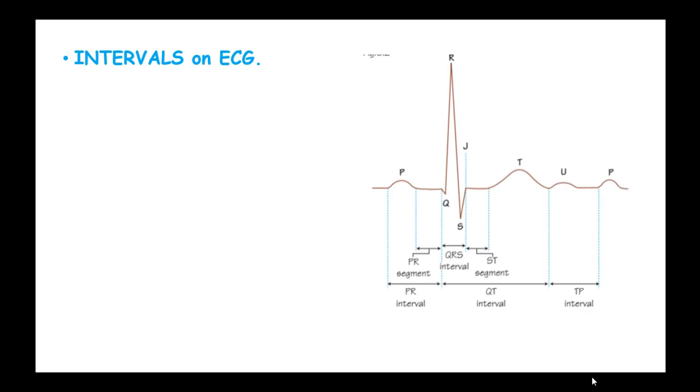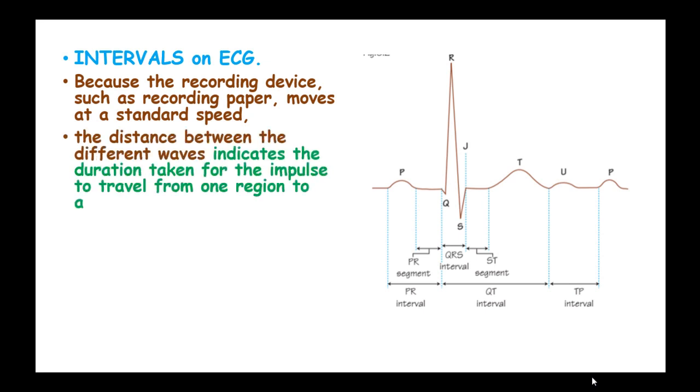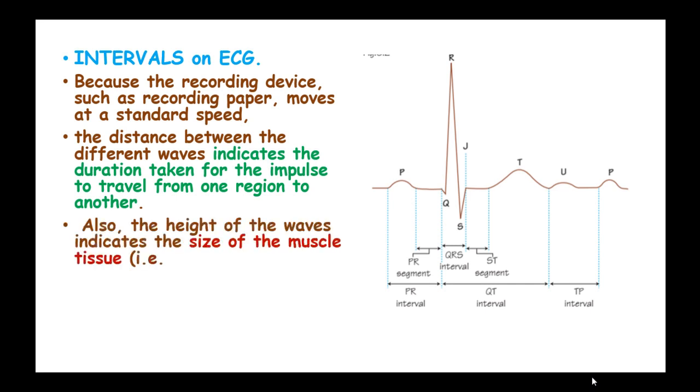The intervals on the electrocardiogram. Because the recording device such as a recording paper moves at standard speed, the distance between the different waves indicates the duration taken for the impulse to travel from one region to another. Also, the height of the waves indicates the size of the muscle tissue, such as hypertrophied muscle tends to produce a larger wave.